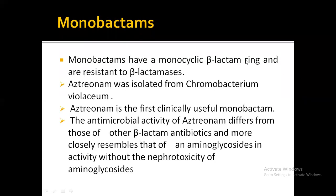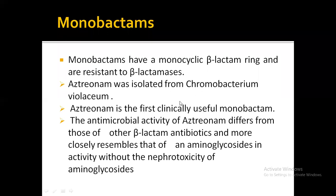Monobactams have a monocyclic beta-lactam ring and are resistant to beta-lactamases. Aztreonam is isolated from Chromobacterium violaceum and is the first clinically used monobactam. The antimicrobial activity of aztreonam differs from other beta-lactam antibiotics and more closely resembles aminoglycosides — it is more of gram-negative action. It is important for its extended spectrum so that we can combine with other penicillins and cephalosporins to get extended activity.